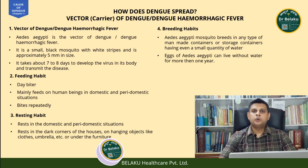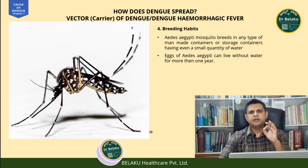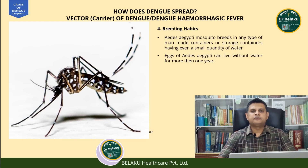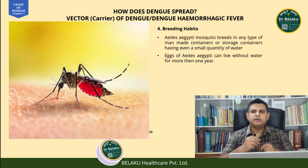Now comes the question of how dengue spreads. Like I explained earlier, dengue is a vector-borne viral disease. The vector here is a female Aedes aegypti mosquito. This mosquito is a small black mosquito about 5–7 mm in size, and it has typical white stripes on its legs — this is how you differentiate a regular mosquito from the Aedes aegypti mosquito that spreads dengue. The feeding habit of this mosquito is that it is a day biter — meaning it bites a person during the day and it bites repeatedly to feed on blood, because that's how it survives.